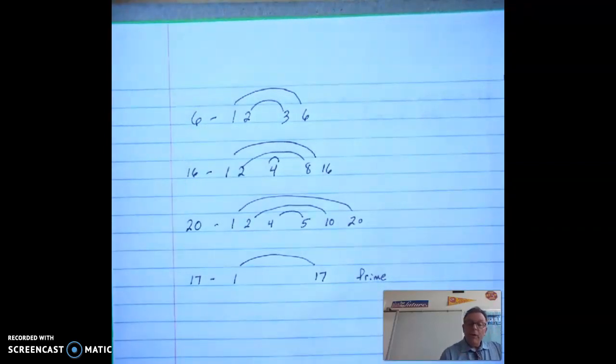Okay. So, so far you have learned a prime number, only two factors, one in itself. A composite number, more than two factors. And what a factor is, which is numbers multiplied together to be a product.